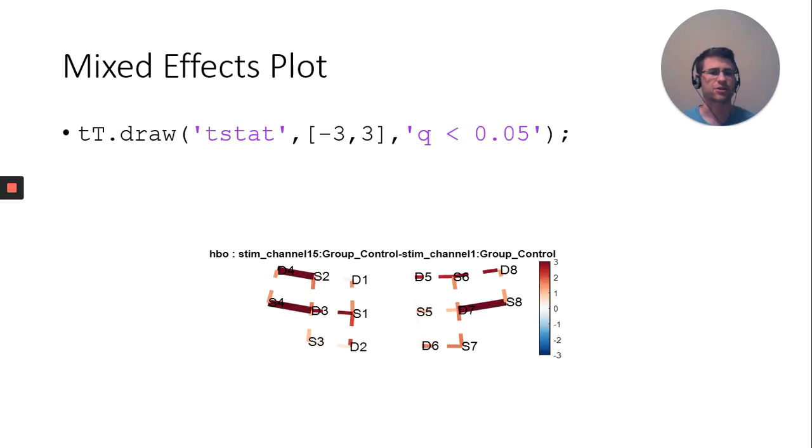To draw that, you can plot your results. You can use a threshold to look at the effects. I do the output dot draw, specify it's the t-stat I want to draw, specify a legend threshold. Here it goes from negative three to three. If those values are too big, all your values look white, not very useful. If they're too small, several max out, also not useful. Here I have q, the corrected p value less than 0.05, so I have these statistically significant channels.